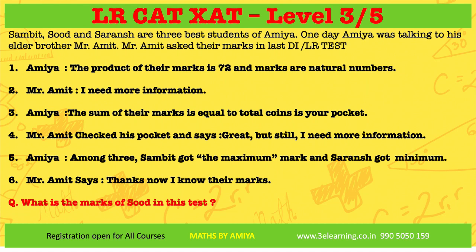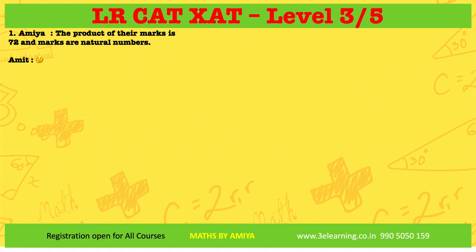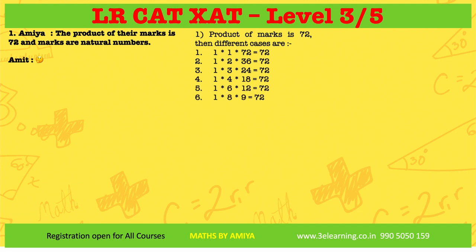In LRDI, information is given and you have to deduce from it. I'm going to decode all the information one by one. The first information: the product of their marks is 72, and marks are natural numbers. When Amie says the product is 72, what would come to Amit's mind? Let's break 72 into products.